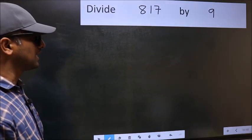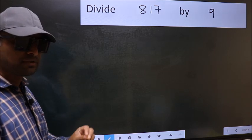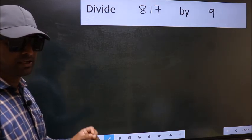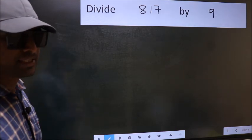Divide 817 by 9. While doing this division, many do this mistake. What is the mistake that they do? I will let you know. But before that, we should frame it in this way.